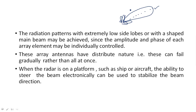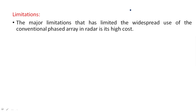When the radar is on a platform such as a ship or aircraft, the ability to steer the beam electronically can be used to stabilize the beam direction. In phased array antennas used on airships or aircraft, the beam can be steered electronically without any mechanical manipulation — simply by changing the phase difference between successive elements, you can achieve beam steering.